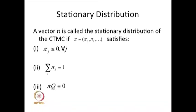The similar way I discussed the stationary distribution for the DTMC model: instead of πQ = 0, we had πP = π. If any vector satisfies πP = π and summation of πⱼ = 1 and all πⱼ ≥ 0, then that is a stationary distribution for DTMC. The same way, if πQ = 0 and summation of πⱼ = 1 with all πⱼ ≥ 0 is satisfied by any vector, then that is the stationary distribution for a time-homogeneous CTMC.